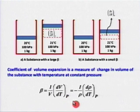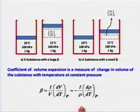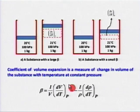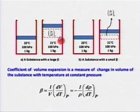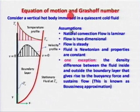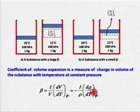This can be replaced by density: beta equals minus 1 by rho times d-rho by dT at constant pressure. The minus sign is there because increase in temperature decreases density — volume and density are inversely proportional. A substance with large beta will undergo large change in volume with temperature, and beta equals minus 1 by rho times d-rho by dT at constant pressure.